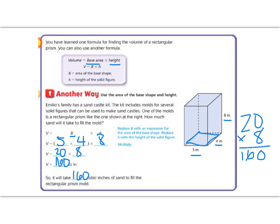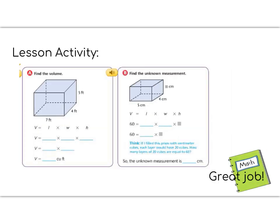Let's continue to the lesson activity. Today's lesson activity is A and B in the try this section. I'll get you started. The first one's going to have us find the volume with the formula length times width times height. The length here is 7. The width is 4. And the height is 5.